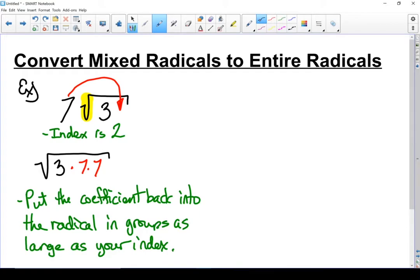And then our final step is we can multiply all those factors together. 3 times 7 times 7 is 147. So the entire radical version of this is the square root of 147. There is my entire radical.